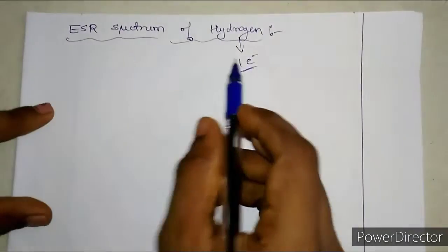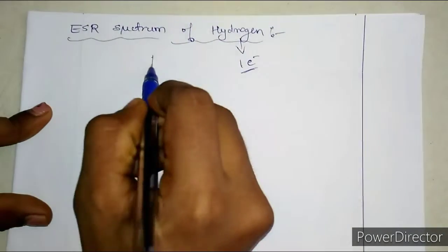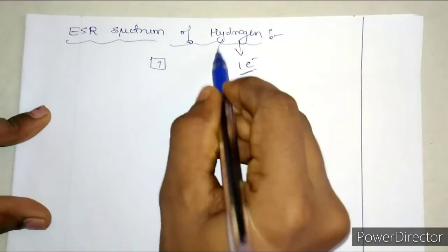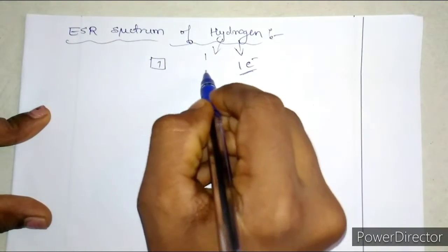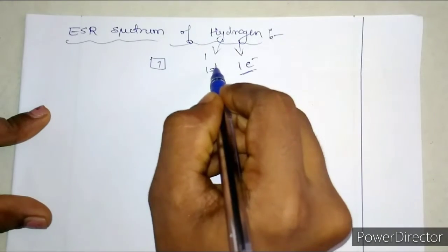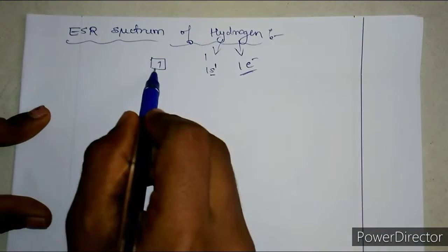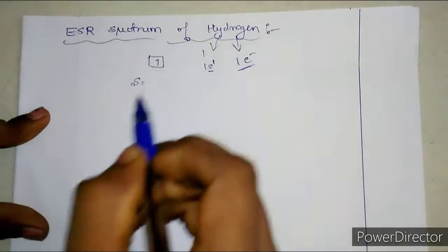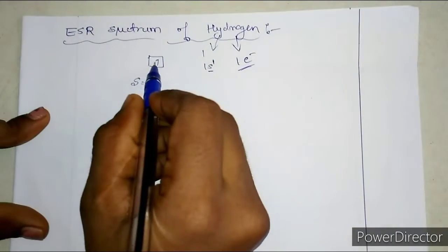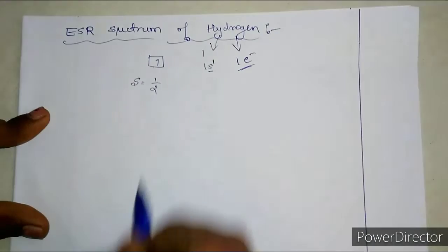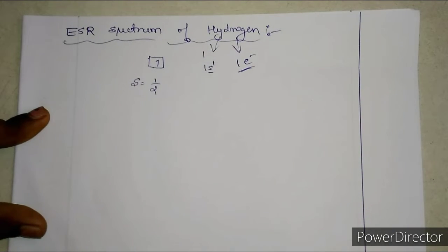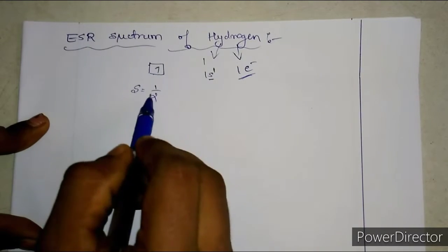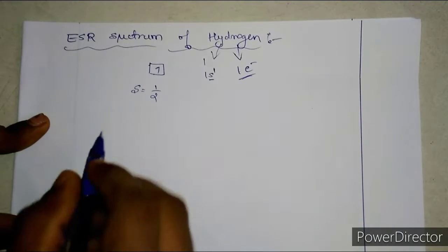This electron in the case of hydrogen will be present in the S orbital. The atomic number is 1, so the electronic configuration is 1s¹, meaning that electron is present in the S orbital. For this electron, what is the S value? S is the spin of that electron, which is 1/2. It is an up spin, so S is equal to plus 1/2.